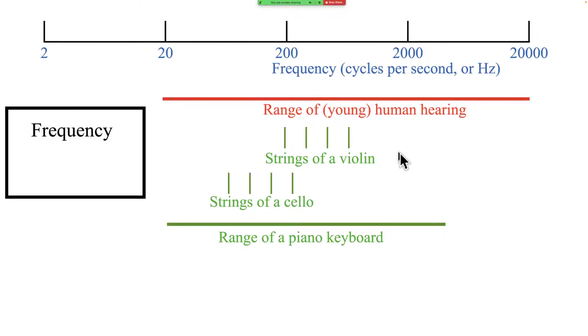I've added a few other relevant frequencies here just to orient you. Here are the tuned pitches, fundamental pitches, of the four open strings of a violin from the G up to the E. Here are the corresponding strings of a cello from the C up to the A. This green line at the bottom is the range of a piano keyboard, standard 88 keys. As you can see, covering really quite a large slice of the whole range of human hearing.